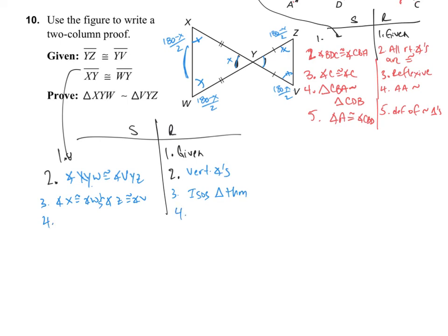So we could say angle X is congruent to angle W and angle Z congruent to angle V because isosceles triangle theorem. And because of that, at this point now, we can say that angle X will be congruent to angle Z, which will be congruent to angle W, which will be congruent to angle V. By triangle sum theorem. And by default now, we end up with triangle XYW is similar to triangle VYZ by angle angle similarity. And we are done.